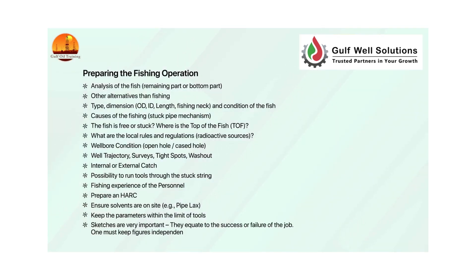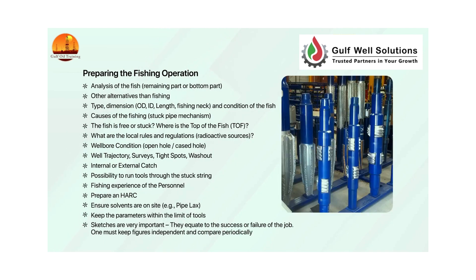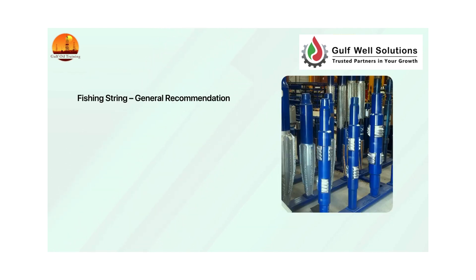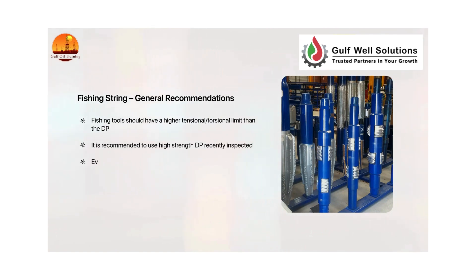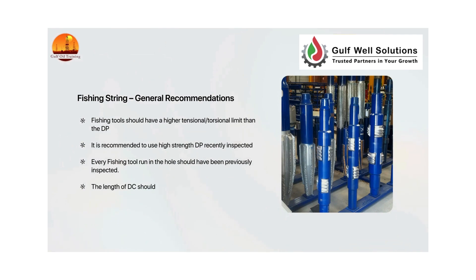One must keep figures independent and compare periodically. Fishing string general recommendations: fishing tools should have a higher tensional and torsional limit than the drill pipe. It is recommended to use high-strength DP recently inspected. Every fishing tool run in the hole should have been previously inspected, and the length of DC should be defined in order to optimize the impact of the fishing jar.